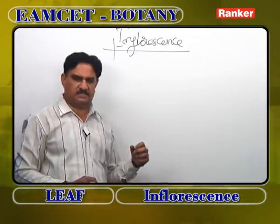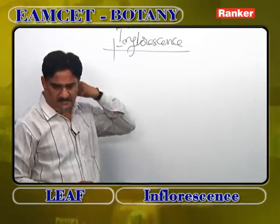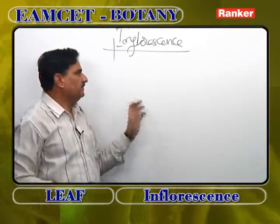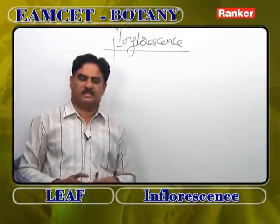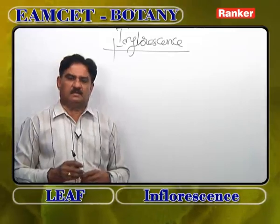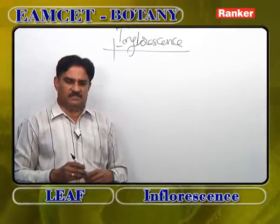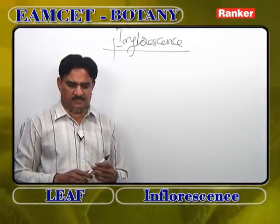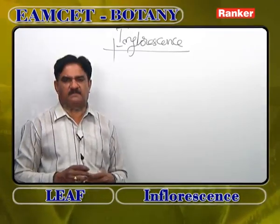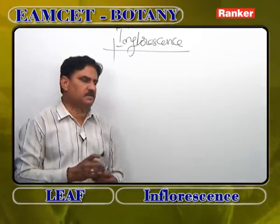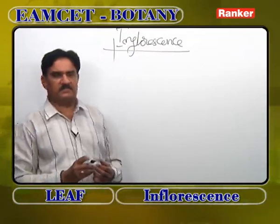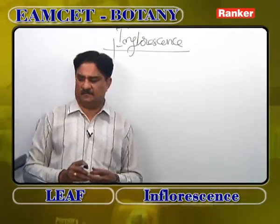After the leaf in your syllabus, the first chapter is root, the second chapter is stem, the third chapter is leaf, and the fourth is flower. Up to here we have completed vegetative morphology — meaning root, stem, and leaf. Now we move to reproductive morphology, which is inflorescence.